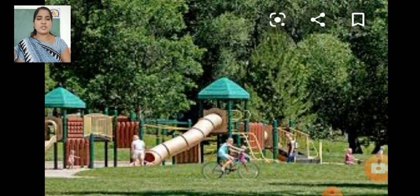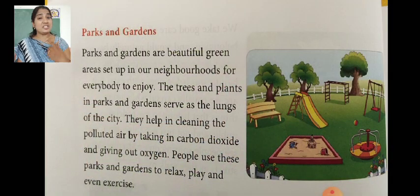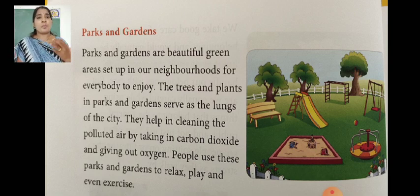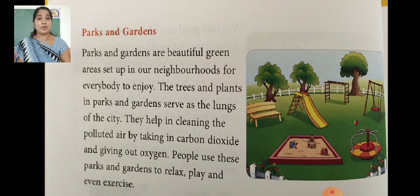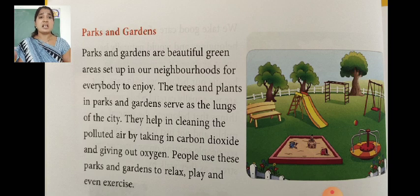Can you tell me which picture this is? This is your park — see, children are playing. Park and gardens are also your public property. Parks and gardens are beautiful green areas set up in our neighborhoods for everybody to enjoy. We can't say that only I will go in the park — everybody can go and enjoy in the park.